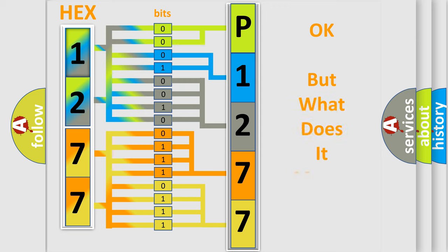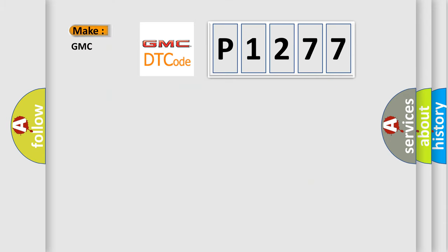The number itself does not make sense to us if we cannot assign information about it to what it actually expresses. So, what does the Diagnostic Trouble Code P1277 interpret specifically for GMC car manufacturers?